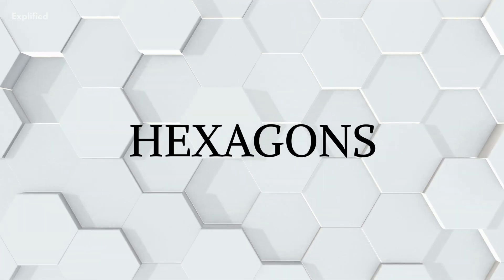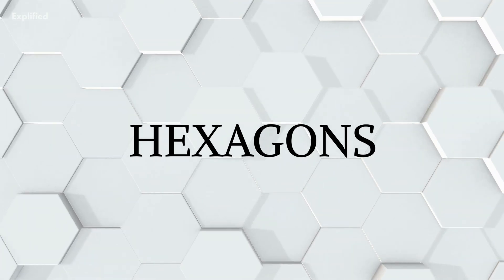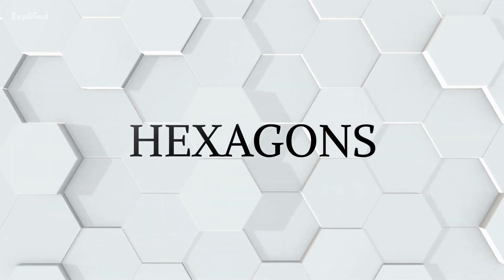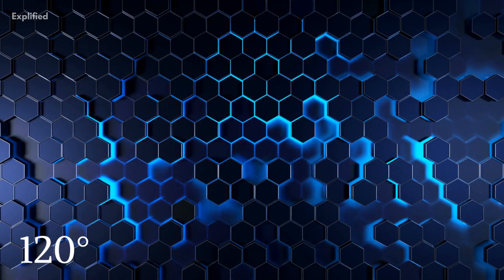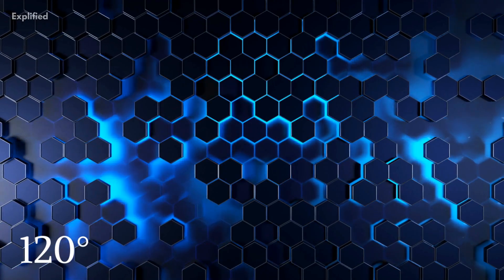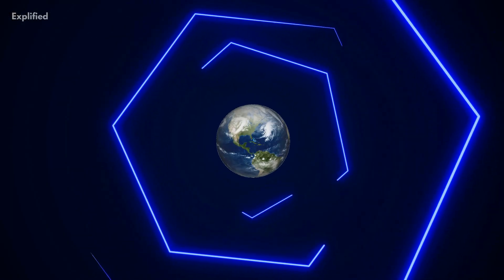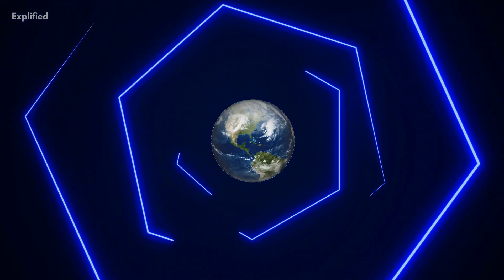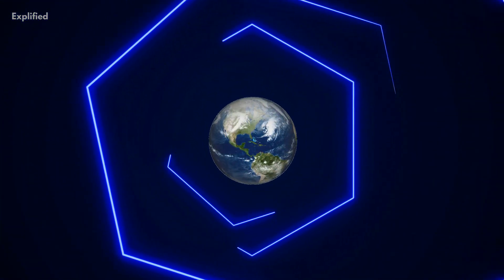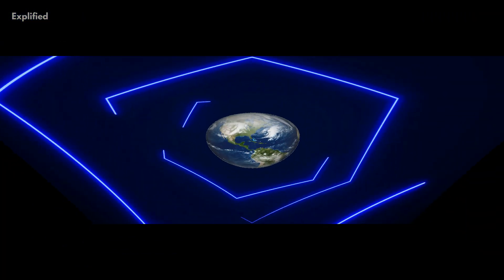Hexagons are six-sided two-dimensional shapes with each side making an angle of 120 degrees to one another. Bet you knew that already, but did you know how common this shape is in our world?